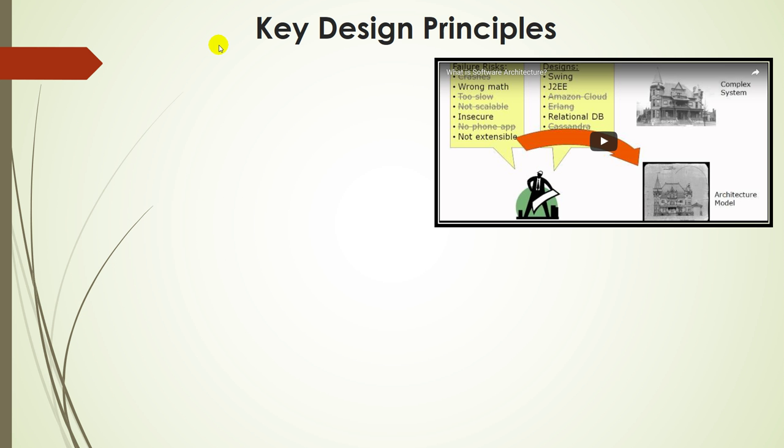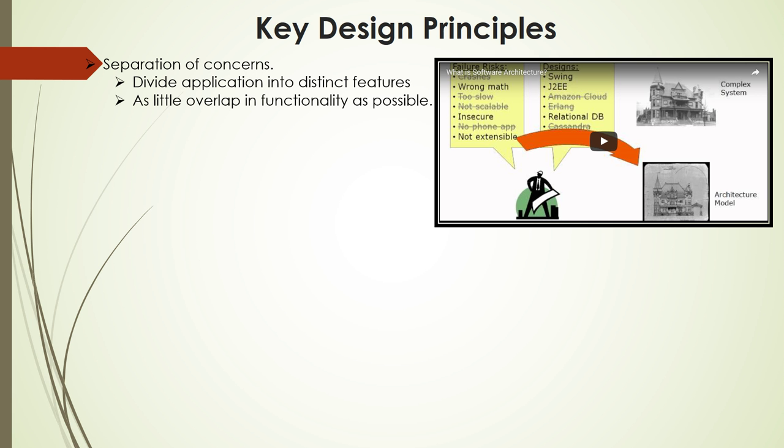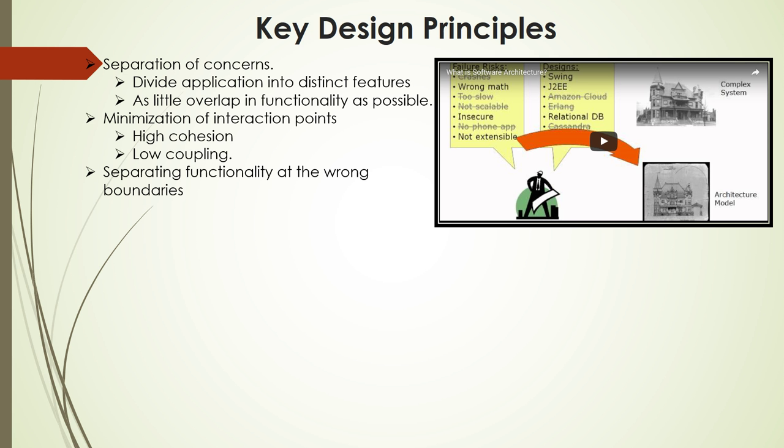Key design principles. Separation of concerns divides your application into distinct features with as little overlap in functionality as possible. The important factor is minimization of interaction points to achieve high cohesion and low coupling. However, separating functionality at the wrong boundaries can result in high coupling and complexity between features even though the functionality within a feature does not significantly overlap.